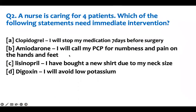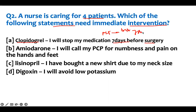Question two: a nurse is caring for four patients — which of the following statements need immediate intervention? Option A: a patient on Clopidogrel says, 'I will stop my medication seven days before surgery.' That's a good idea. Anti-platelets like aspirin and clopidogrel inhibit platelets for seven days, so you teach the patient to stop five to seven days before surgery. That's correct — no need to intervene.